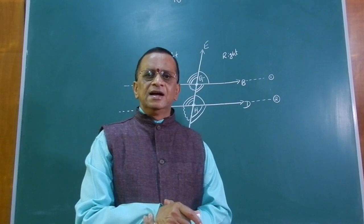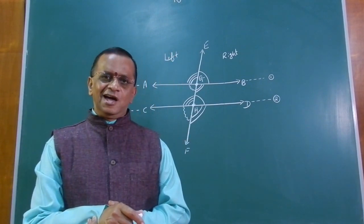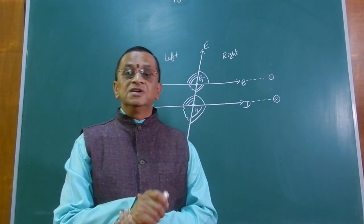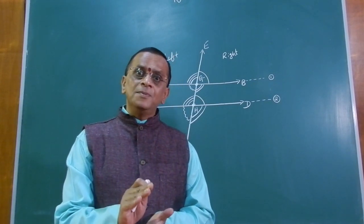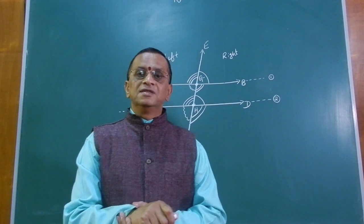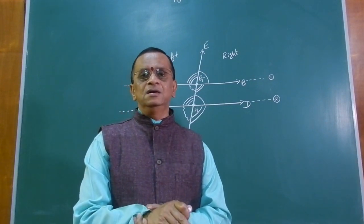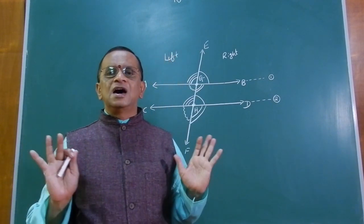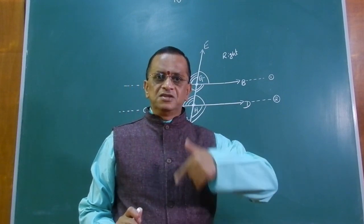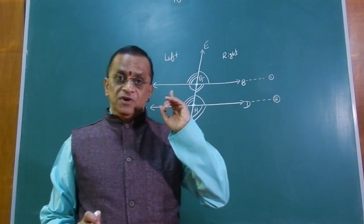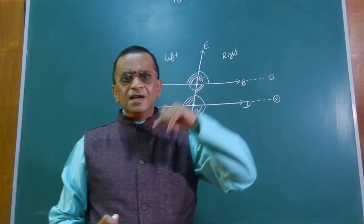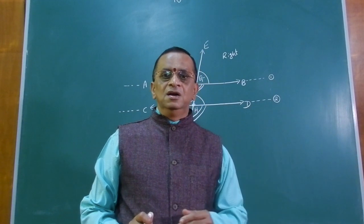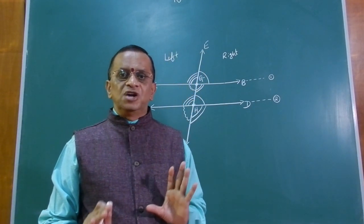If a transversal line cuts any two parallel lines, then the corresponding angles are equal. You must also remember the converse: if a straight line intersects any two straight lines such that corresponding angles are equal, then the lines are parallel. So, if lines are parallel then corresponding angles are equal, and if corresponding angles are equal then lines are parallel.